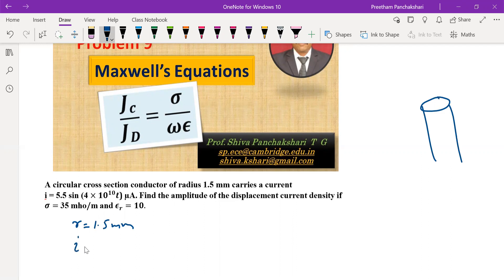It's mentioned here as i. Now the question is, is it conduction current? Of course yes. Generally when we say current it is conduction current only, so we can take it as Ic which is 5.5 sin(4×10^10 t) microamps.